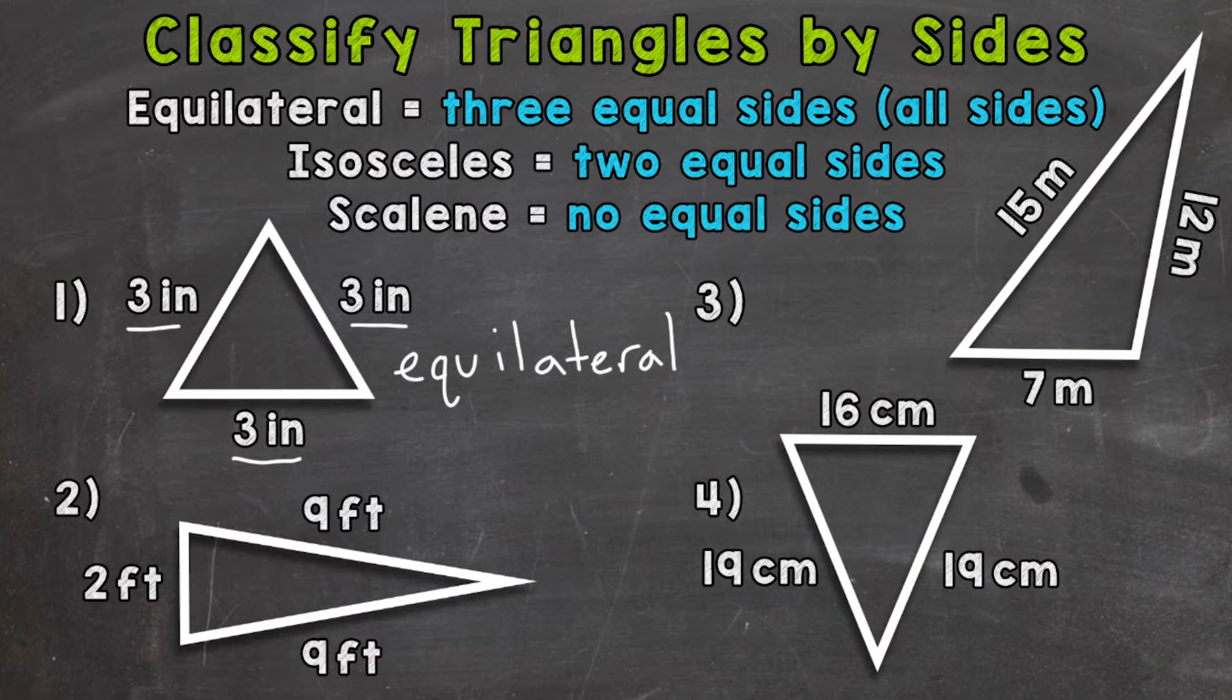For number two, we have a triangle with a side two feet and then a side nine feet and then the other side nine feet. So two equal sides. This would be an example of an isosceles triangle.